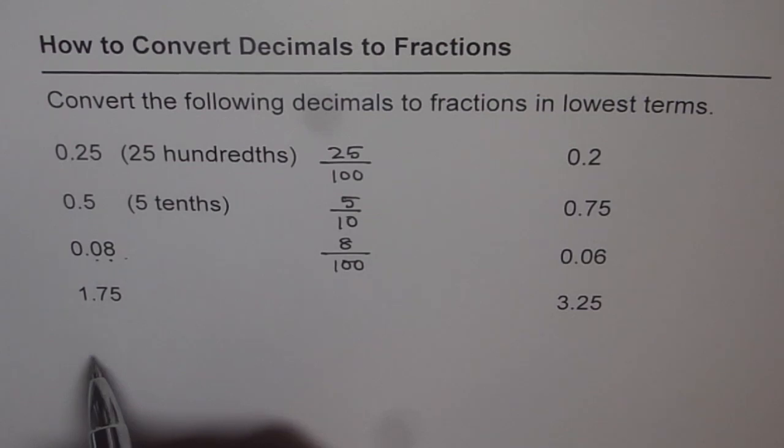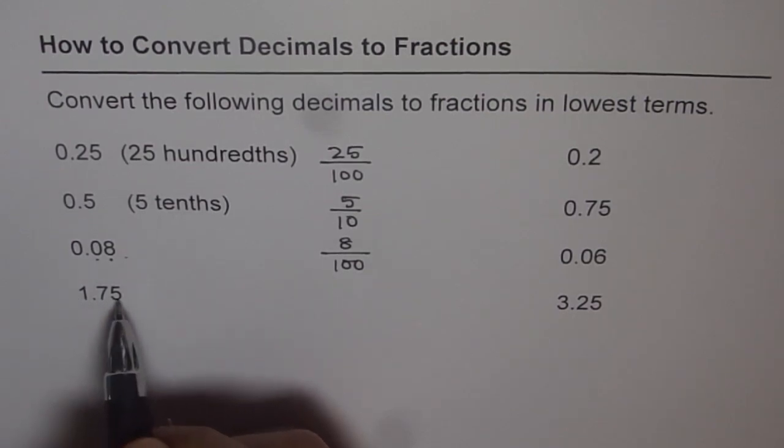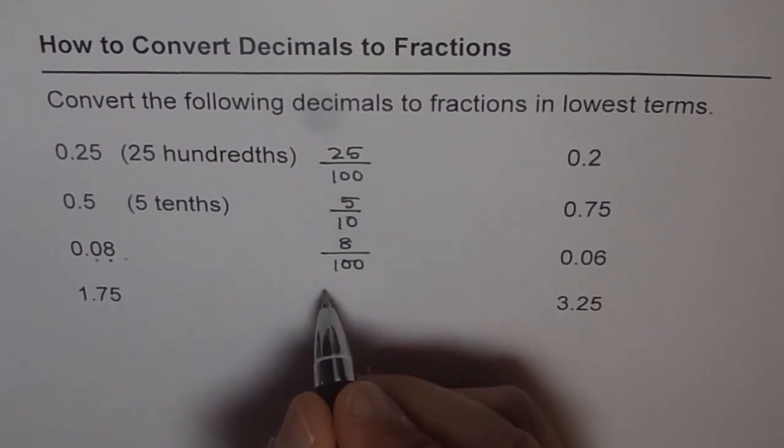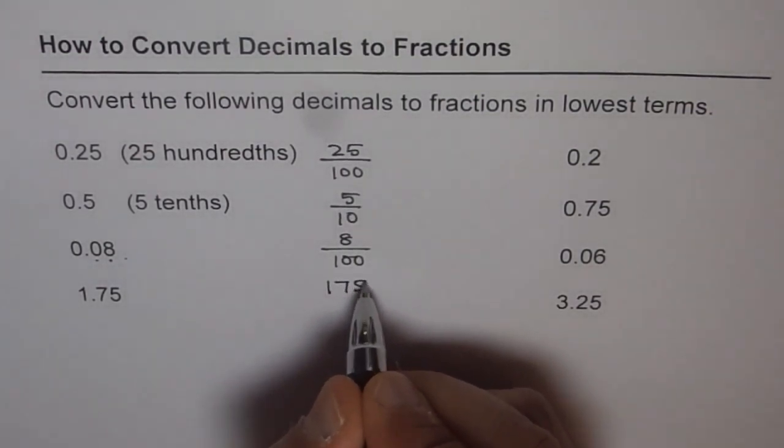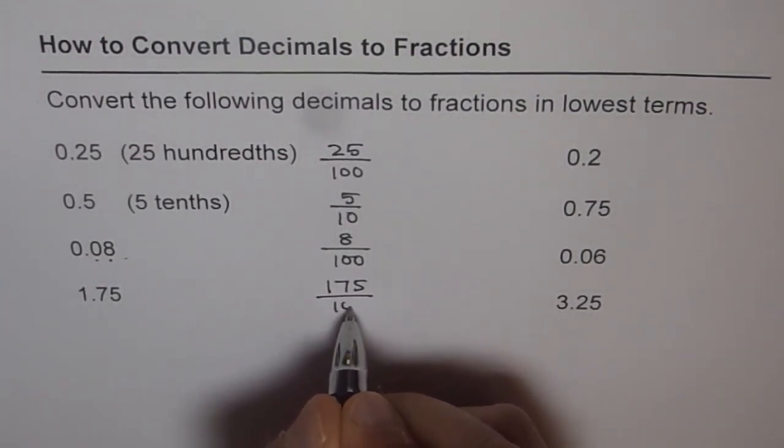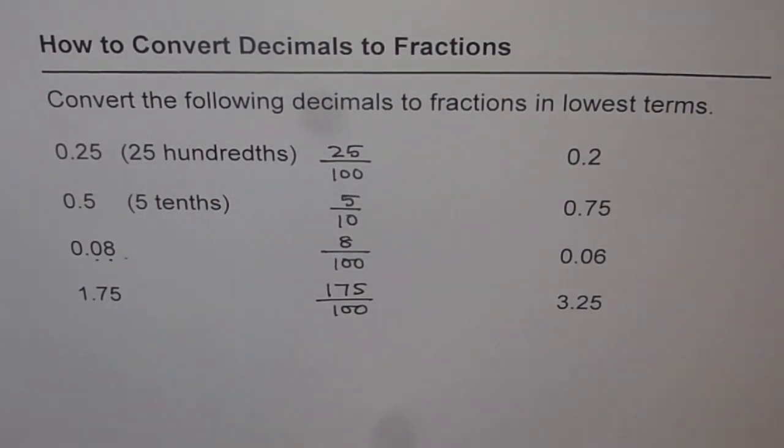How about 1.75? After decimal say 1 and 75 hundredths. So that is how you can convert decimals to fractions by reading them in the right way as they should be read. So that is the beauty of decimal system.